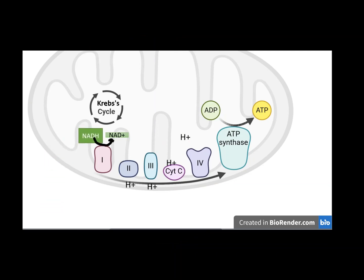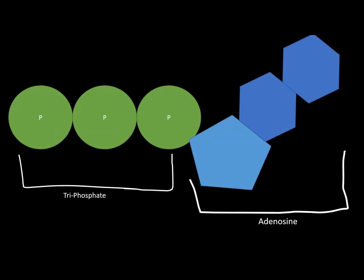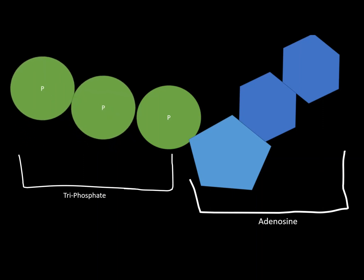and NADH then goes to the mitochondria to make more ATP through the electron transport chain, where the energy from the NADH is used to pump protons across the membrane, and then they're let back through ATP synthase, which uses the potential energy released to make more ATP. Then more NADH comes through the Krebs cycle, which breaks down other products of glycolysis.